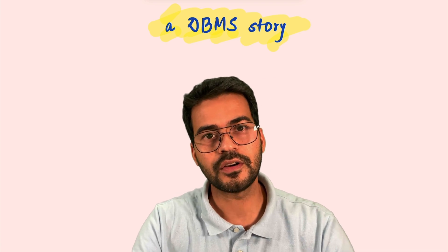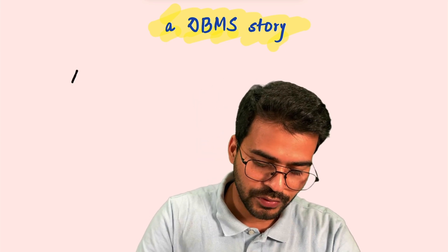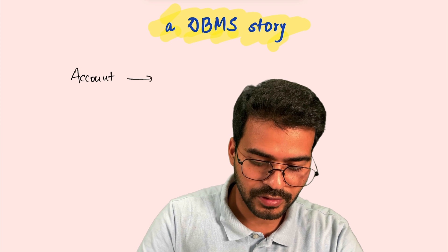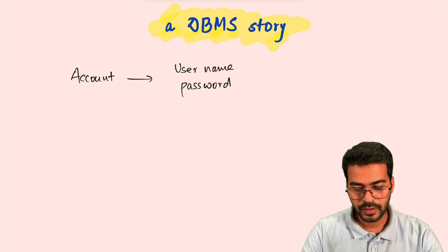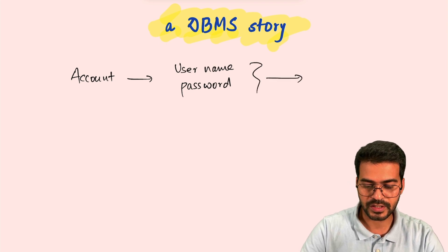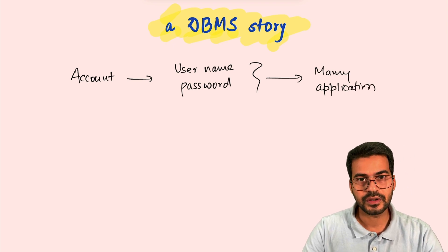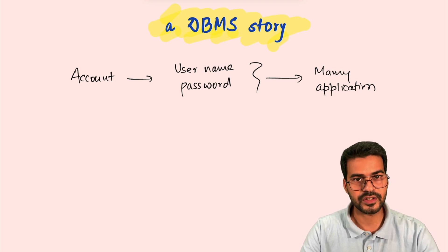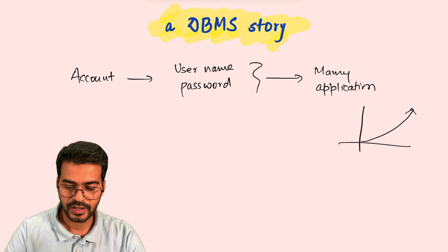We all use online systems, right? Online websites - many sites will ask you to create an account, and usually you will have a username and password combination. What happens is you use multiple applications, and with time this number increases because every day we find new applications being launched. This count increases in an exponential fashion.